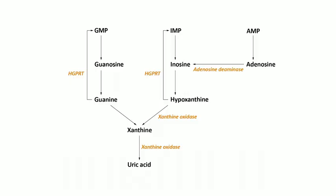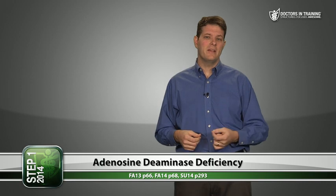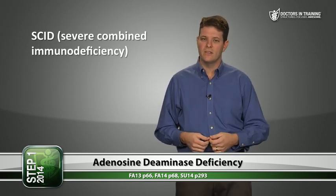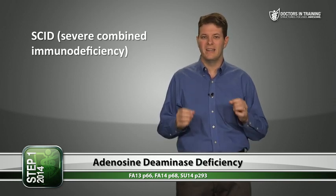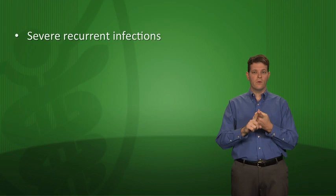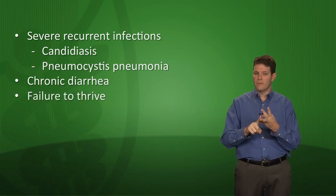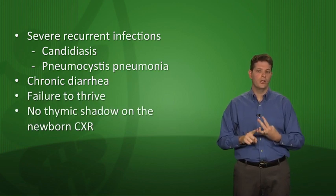Adenosine deaminase deficiency is another disease to mention. AMP is broken down to adenosine, and adenosine deaminase converts adenosine to inosine. Adenosine deaminase deficiency is one cause of SCID (severe combined immunodeficiency) — the only one to focus on for Step 1. SCID affects both B and T cells, with the clinical triad of severe recurrent infections, chronic diarrhea, failure to thrive, and no thymic shadow on chest X-ray.